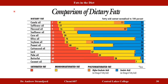When selecting cooking oils for a diet high in monounsaturated fats and low in saturated fats, canola oil, safflower oil, and olive oil are good choices — all contain over 60% monounsaturated fats and less than 20% saturated fats. Lard, palm oil, butter fat, and coconut oil (about 91% saturated) are considered less healthy for cooking. Choice of oil also depends on taste and cooking temperature.